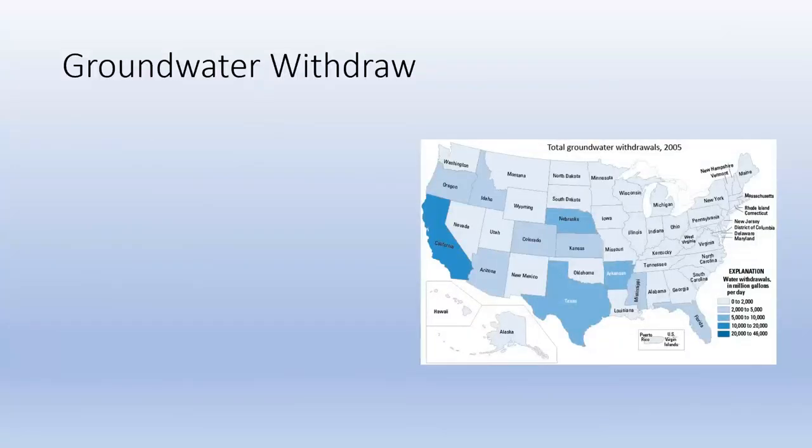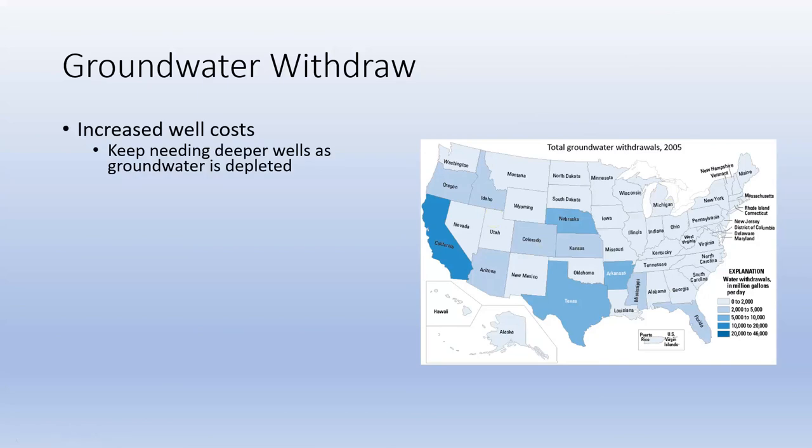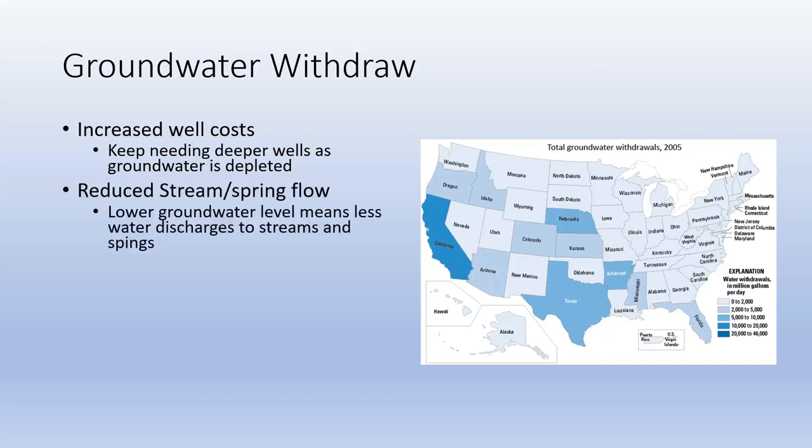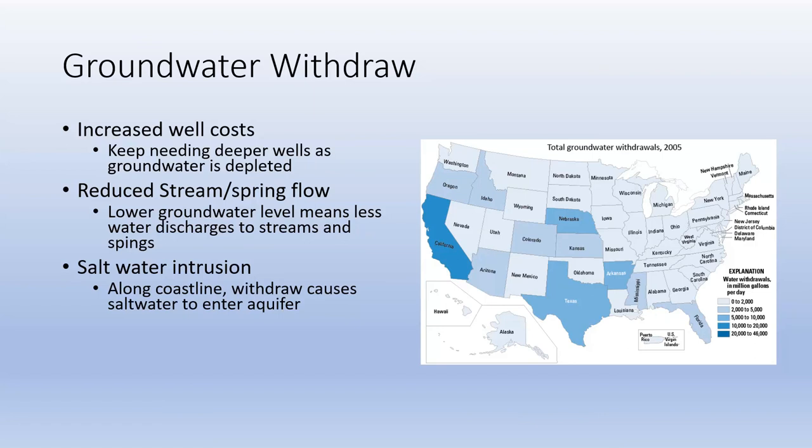So, just to show you kind of here, state by state, groundwater withdraws. Over here, we've got lots of water, so we don't need to draw as much groundwater. Out west, they withdraw a lot more. What are some issues with groundwater withdrawal? Well, increasing well costs. As groundwater gets lower and lower, you need to keep digging your wells deeper and deeper and deeper. As groundwater gets lower, especially in human regions here, if we start to lose groundwater, it means our stream and spring flow is going to be reduced.